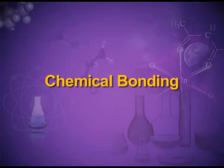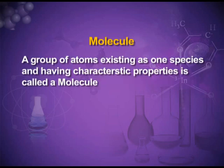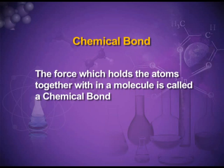Why do atoms combine and how do they combine? We will study that today. Today's topic is chemical bonding, but let us first know what is a molecule. A molecule is a group of atoms existing as one species and having characteristic properties. A molecule is made up of two or more atoms. There must be some force holding these atoms together — that force is a chemical bond. The force which holds the atoms together within a molecule is called a chemical bond.